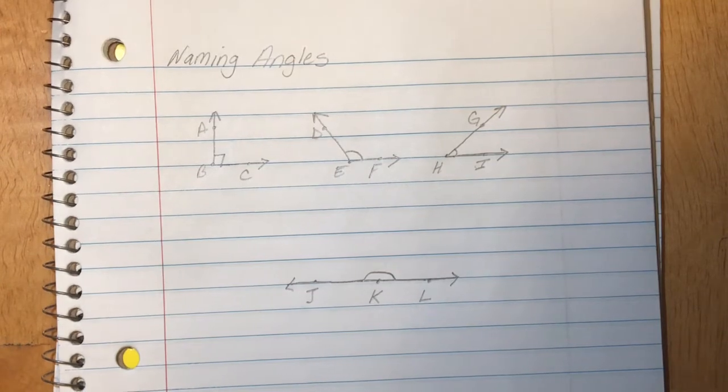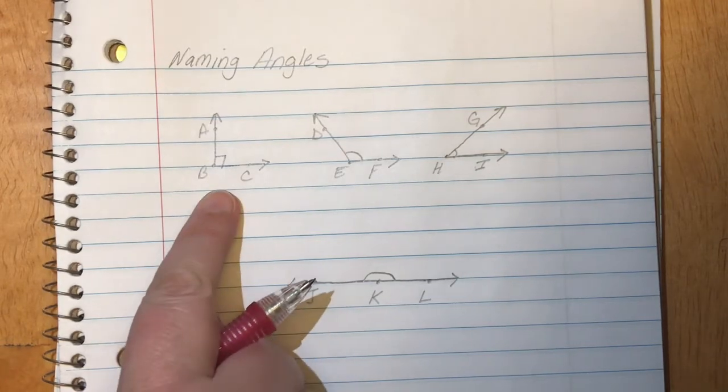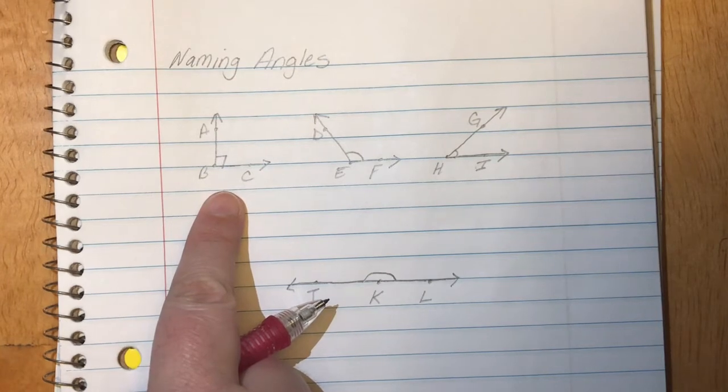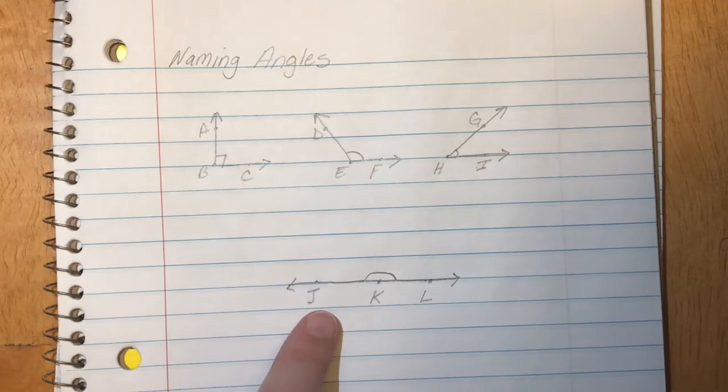We're going to name them. We're going to talk about the measurements of each angle. The first one we have here, if you notice, sort of looks like a capital print L and you'll notice that I have some letters on it just like I do on the other pictures.